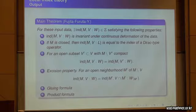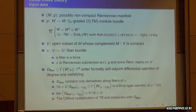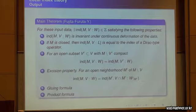The second property: we do not assume M is compact, but the complement of V is compact. In particular, if M itself is compact, the local index is equal to the usual index of the Dirac-type operator.